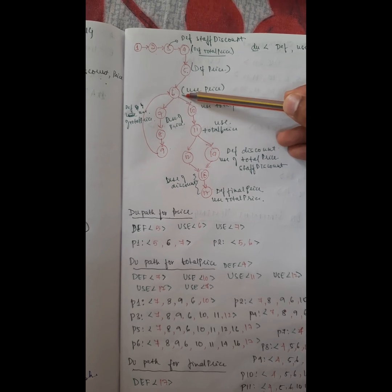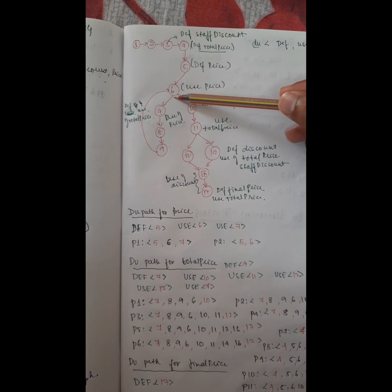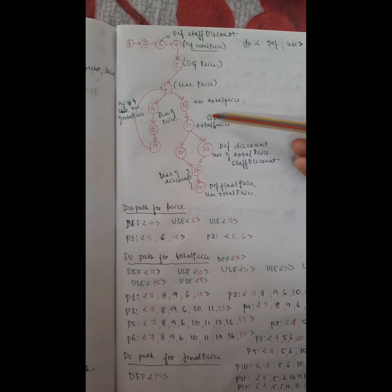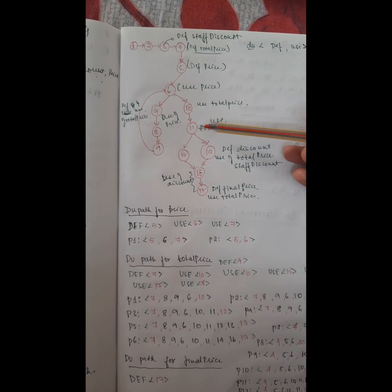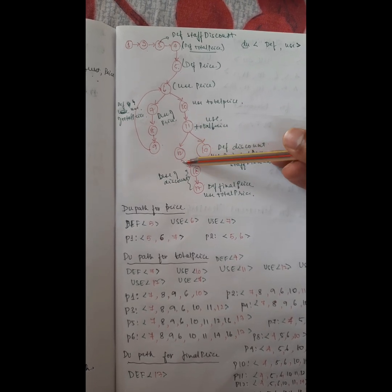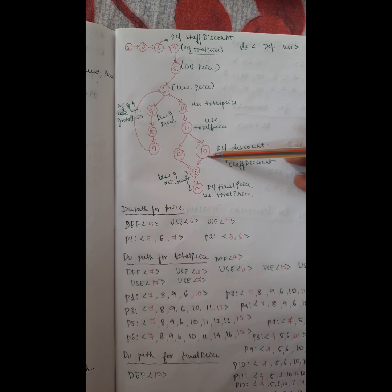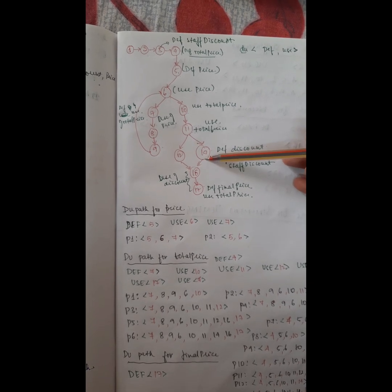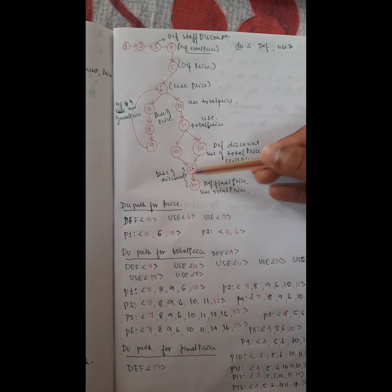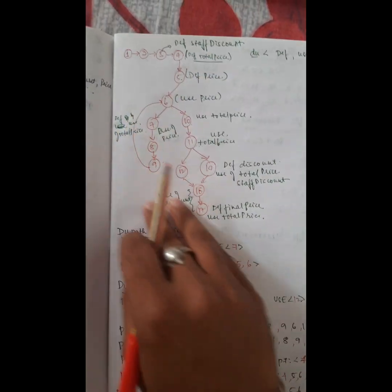Again we check whether price is not equal to minus one. If it is true we continue; if not, we come out of the loop and go directly to the tenth statement, printing total price. Then we check an if condition: is total price greater than 15? If it is greater than 15, line 12 sets discount equal to staff discount multiplied by total price plus 0.50. If not, we go to line 14, where discount equals staff discount multiplied by total price. Both results converge at line 16, printing the discount, and then line 17 calculates final price equals total price minus discount.